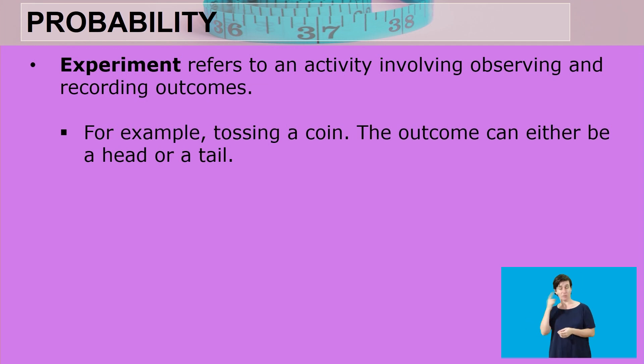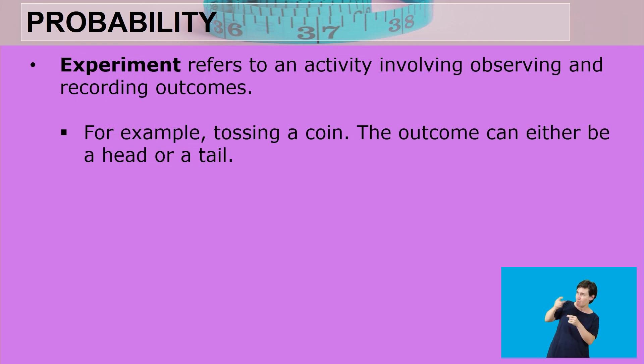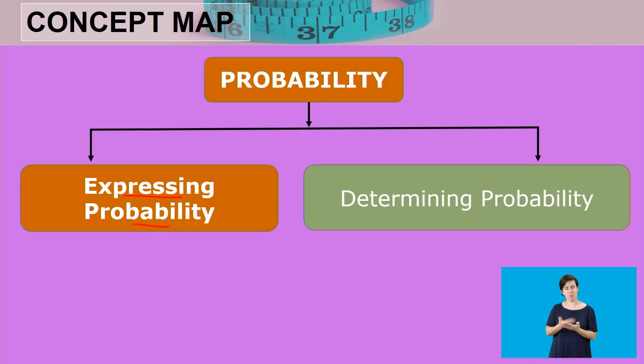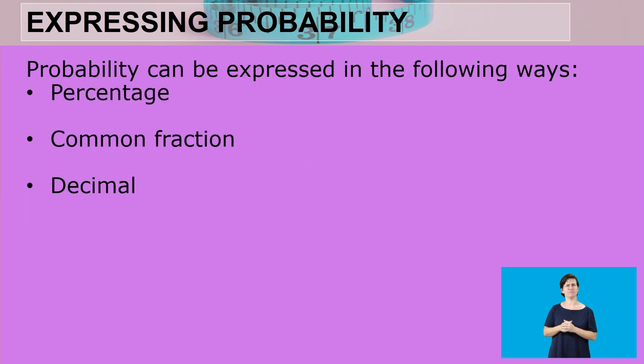For example, when tossing a coin, the outcome can either be a head or a tail. Whenever you take your coin and toss it, that is observing the particular event taking place. When you record that event, you write down whether the coin has landed on a tail or on a head.